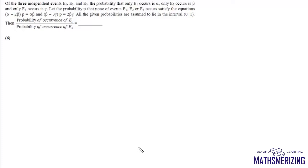The question is: of three independent events e1, e2, and e3, the probability that only e1 occurs is alpha, only e2 occurs is beta, and only e3 occurs is gamma. Let p be the probability that none of the events e1, e2, or e3 occurs, satisfying the equations: alpha minus 2 beta p equals alpha beta, and beta minus 3 gamma into p equals 2 beta gamma. All given probabilities lie in the interval (0, 1), both non-inclusive. We need to find the probability of occurrence of e1 upon probability of occurrence of e3.